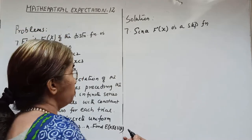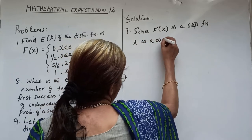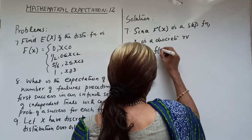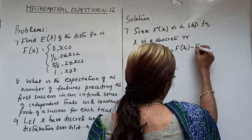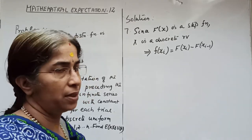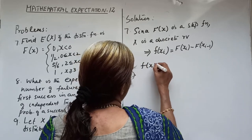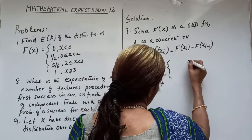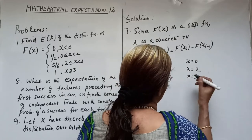Since X is a discrete random variable, we use the formula: small f(X_i) = F(X_i) − F(X_{i−1}). The limit values — that is, the values of X — are X = 0, X = 2, and X = 3.